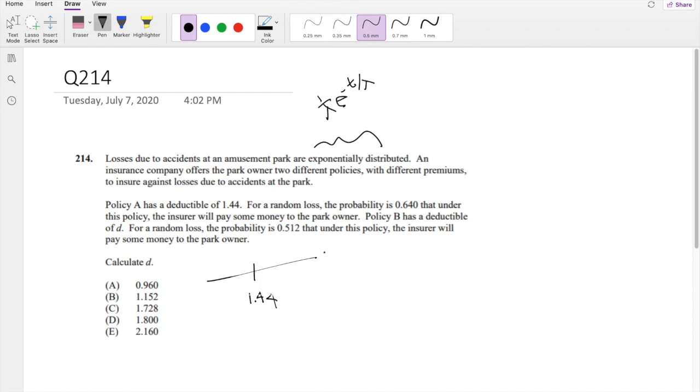So if they pay some money to the owner, that means the loss is over the deductible, right? Because this is the only part where they actually pay some money.